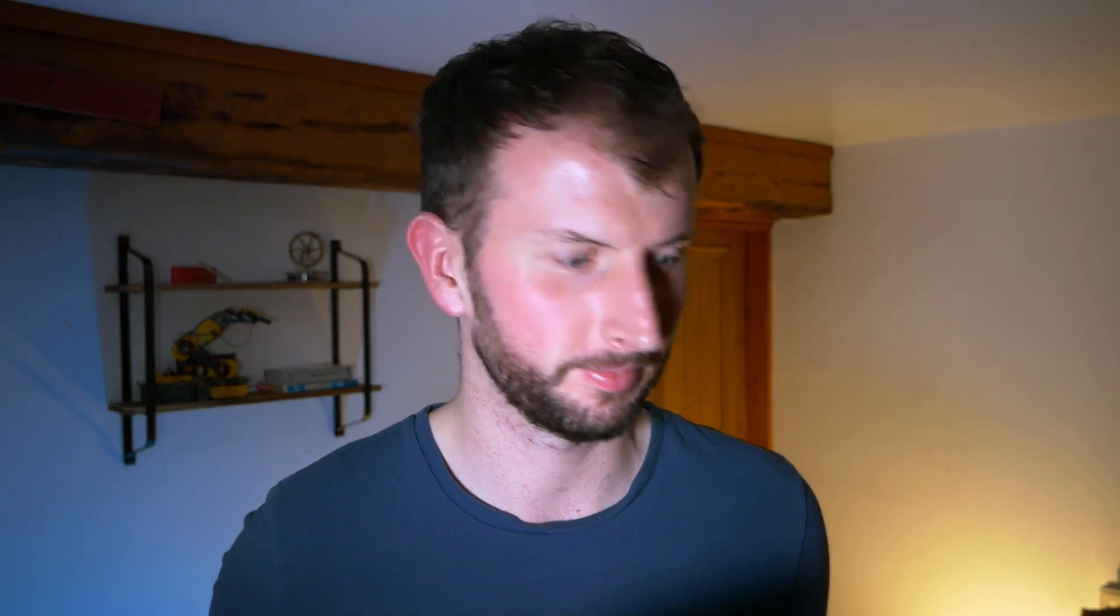And let's now do a little bit of rearranging to get it in the same form so that we can understand it in terms of x1 and y1. So here we have the transformation linear equations from x1, y1 to x3, y3.